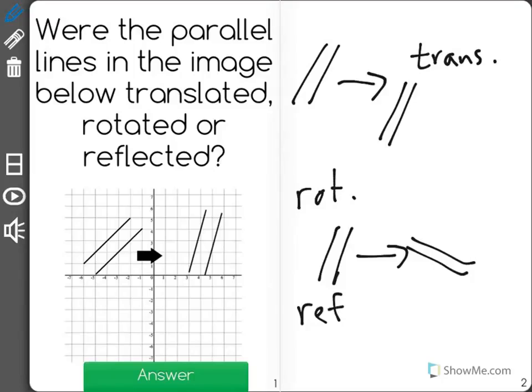And last would be a reflection, where over a certain line or a certain point, you have parallel lines that then mirror each other on the other side of that line or point.